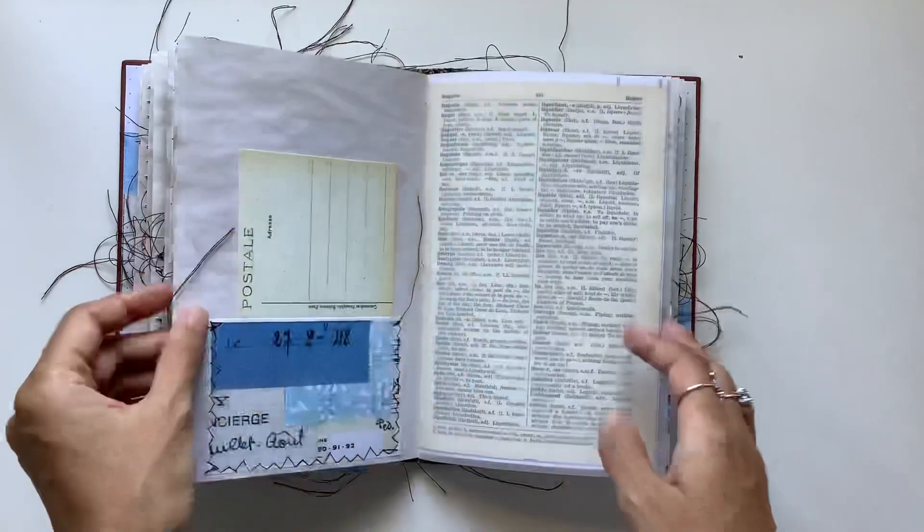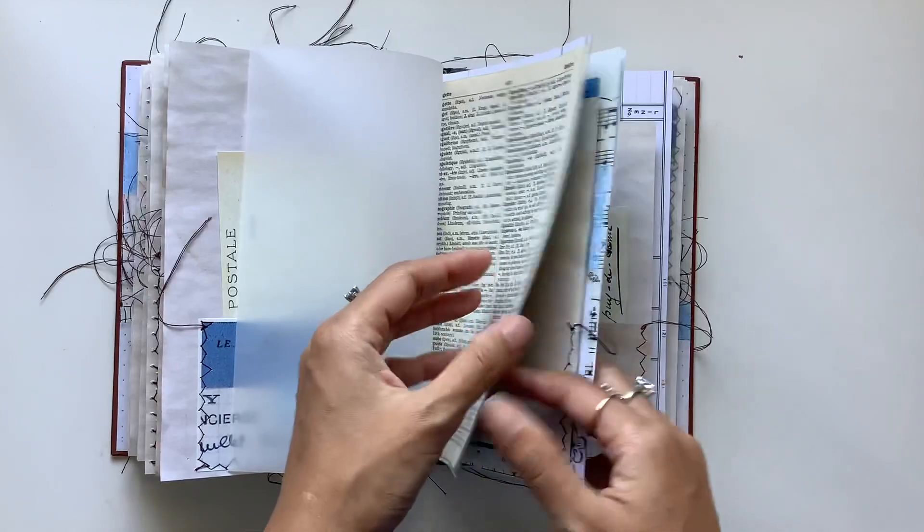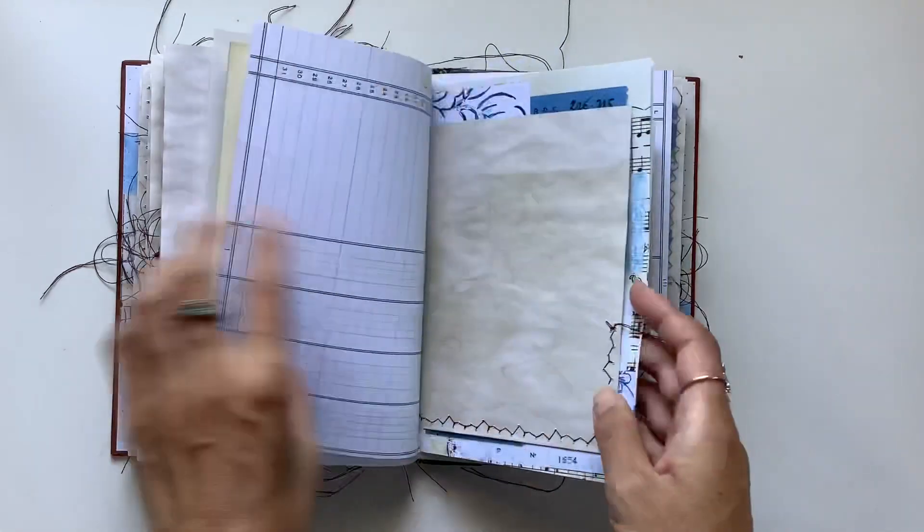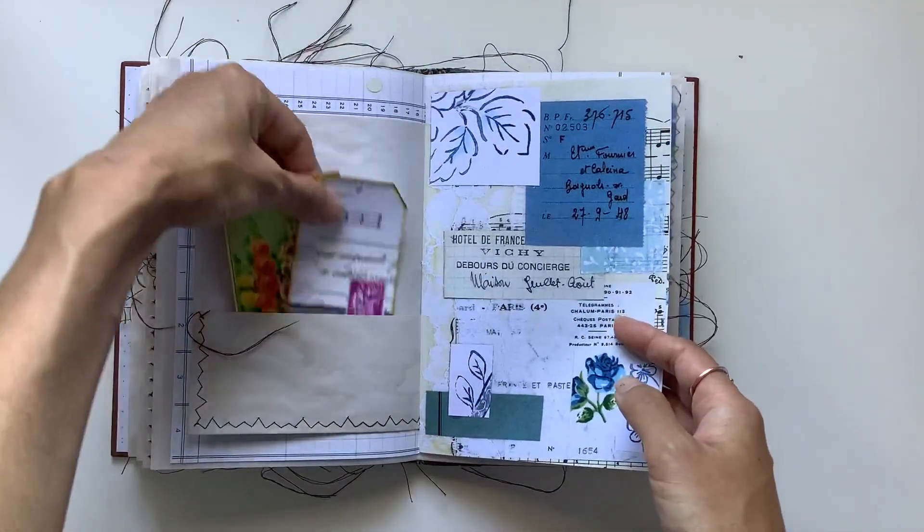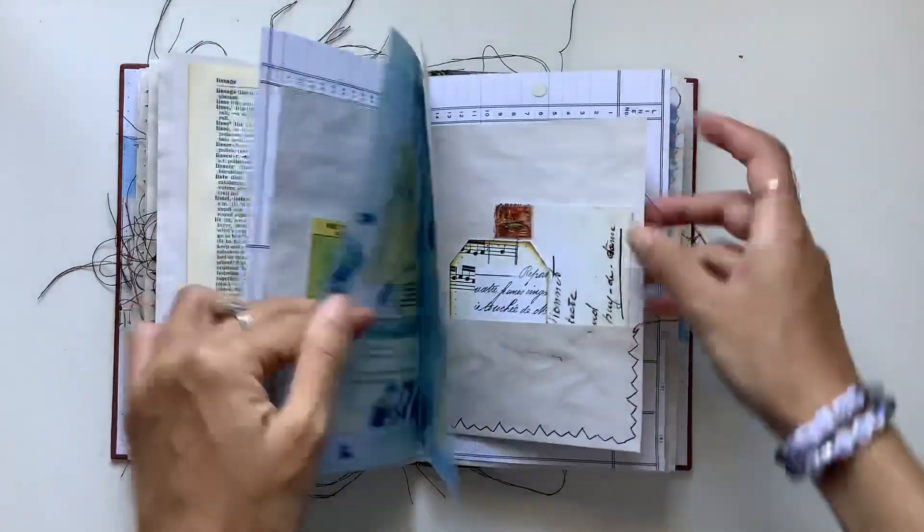Vintage French receipt. This one's a postcard. Some tags and seed packets in there. Envelope and tag in that one.